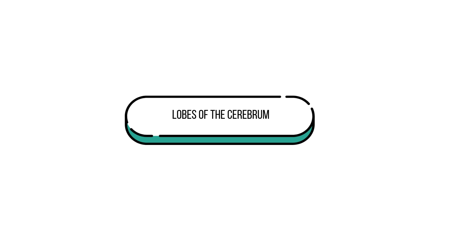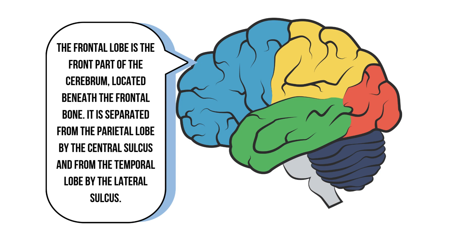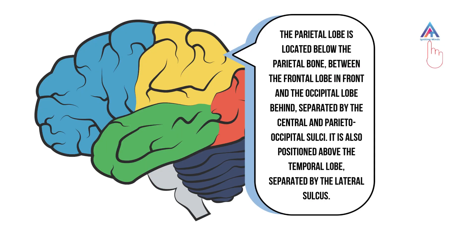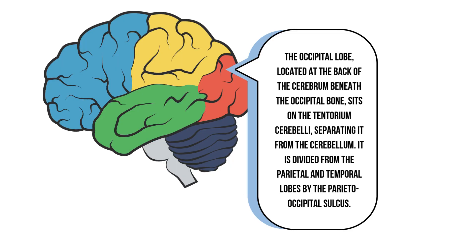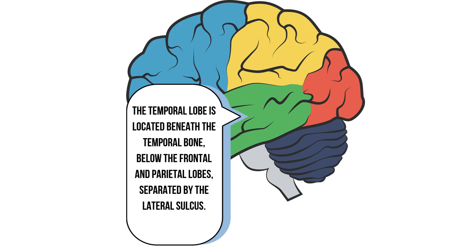Now let's explore the different lobes of the cerebrum. The frontal lobe is the front part of the cerebrum situated beneath the frontal bone. It is separated from the parietal lobe by the central sulcus and from the temporal lobe by the lateral sulcus. The parietal lobe is situated below the parietal bone between the frontal lobe in front and the occipital lobe behind. It is separated from the frontal lobe by the central sulcus and from the occipital lobe by the parieto-occipital sulcus, and is positioned above the temporal bone separated by the lateral sulcus. The occipital lobe is situated at the back of the cerebrum below the occipital bone and is separated from the cerebellum by the tentorium cerebelli. It is distinct from the parietal and temporal lobes by the parieto-occipital sulcus. The temporal lobe is located beneath the temporal bone, below the frontal and parietal lobes, separated by the lateral sulcus.